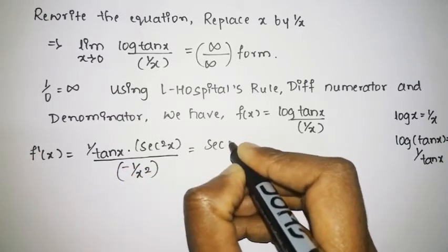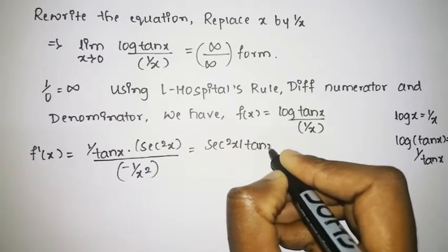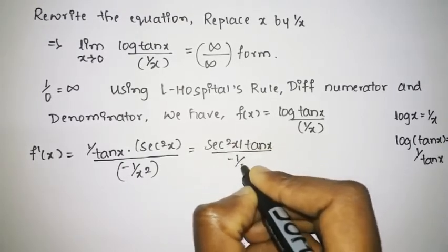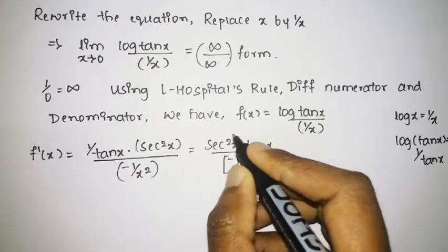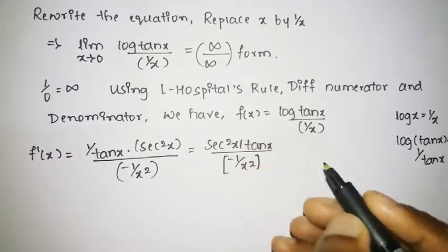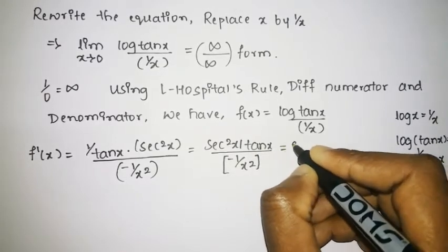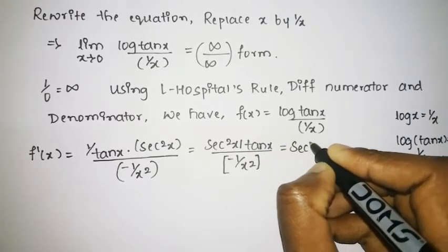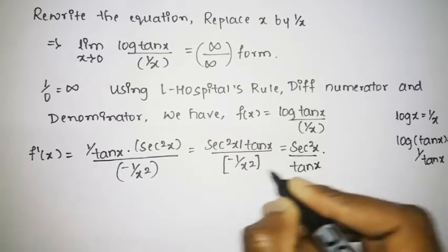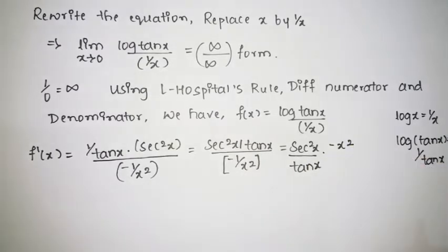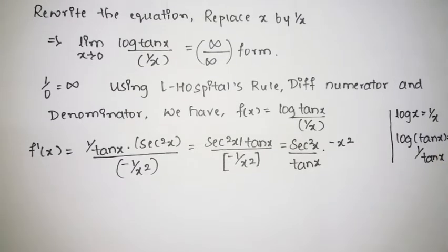The differentiation of 1 by x in the denominator is minus 1 divided by x squared. So we have obtained sec²x divided by tan x, divided by minus 1 divided by x squared. Minus x squared then goes to the numerator, giving us the reduced form.